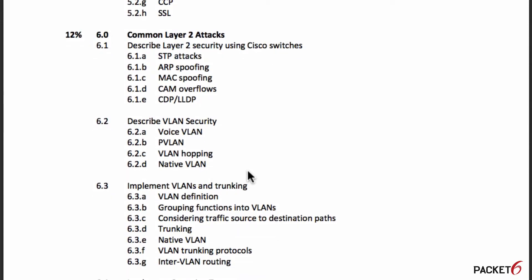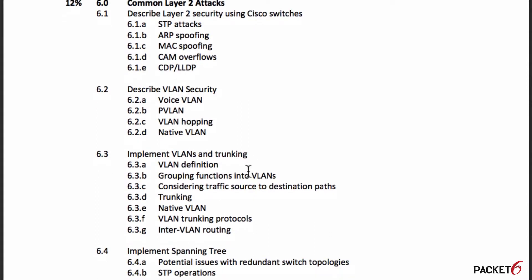Objective 6.0 covers common Layer 2 attacks and is 12% of the exam. Half of it is describing Layer 2 security using Cisco switches and describing VLAN security — voice VLAN, private VLAN, VLAN hopping, and native VLAN. Common attacks include STP attacks, ARP spoofing, MAC spoofing, CAM overflow, and security with CDP and LLDP. You'll also need to implement by configuring VLANs, trunking, and spanning tree.